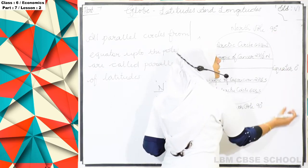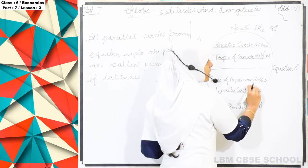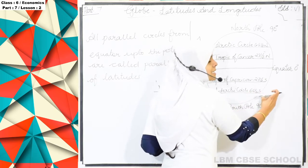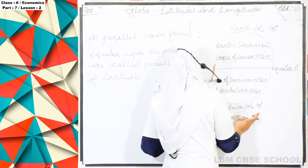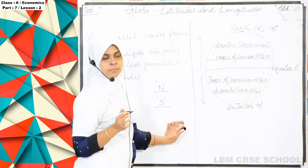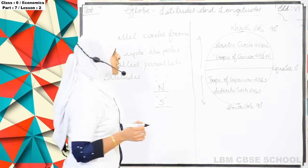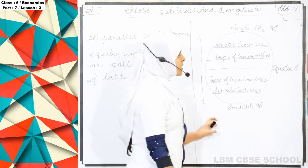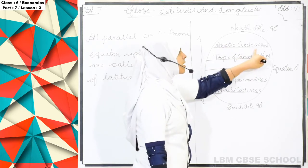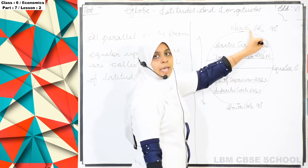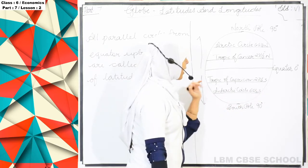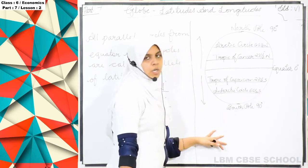Below the equator is considered south, and we write those latitudes with the initial S. The first is the Tropic of Capricorn at 23.5 degrees south. After that comes the Antarctic Circle at 66.5 degrees south, and then the South Pole.